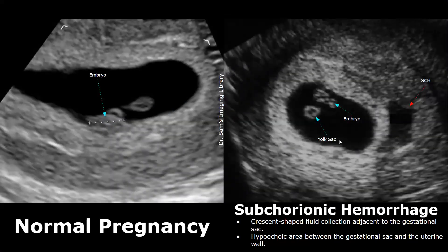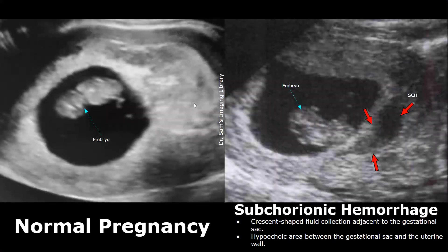This is another case of a subchorionic hemorrhage. A hypoechoic fluid collection is seen next to the gestational sac in early pregnancy. In a normal pregnancy, no such hypoechoic fluid collection is seen next to the gestational sac. This image also shows a hypoechoic fluid collection next to the gestational sac indicating a subchorionic hemorrhage.